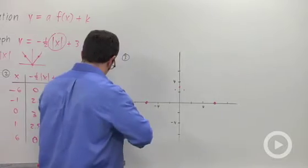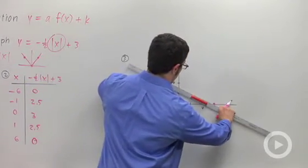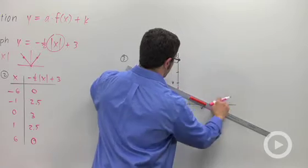And that's going to give us a much better graph if we use points that are further away from the y-intercept. So this is going to be our graph.